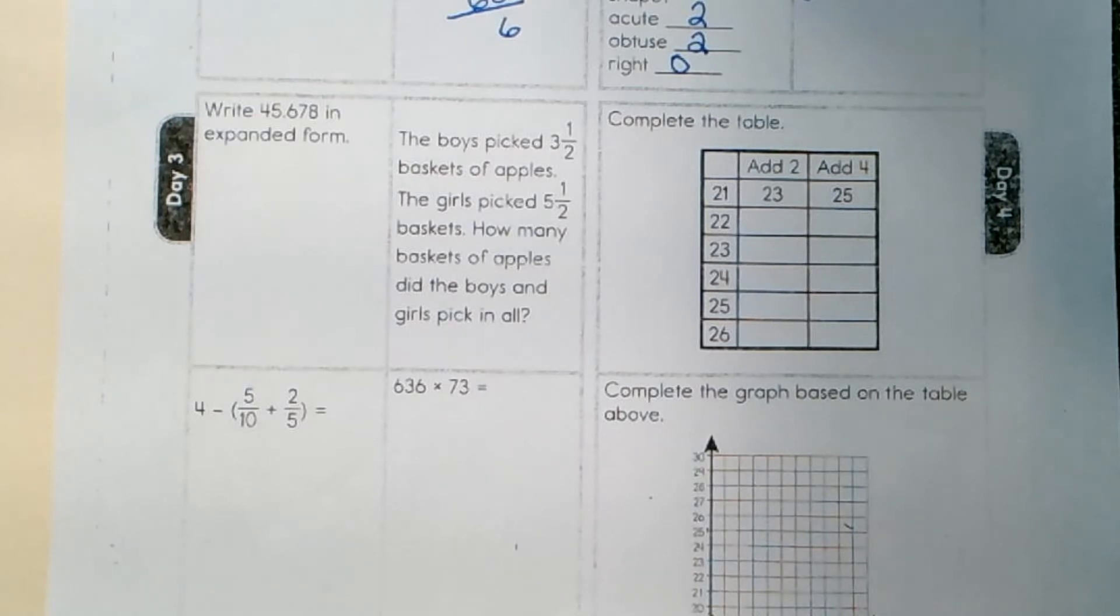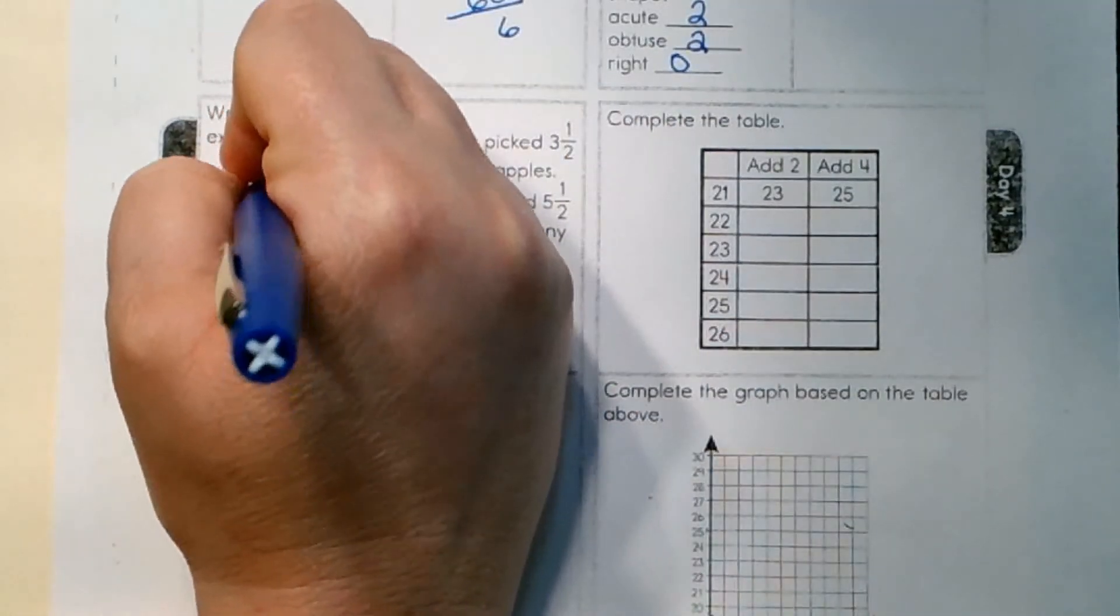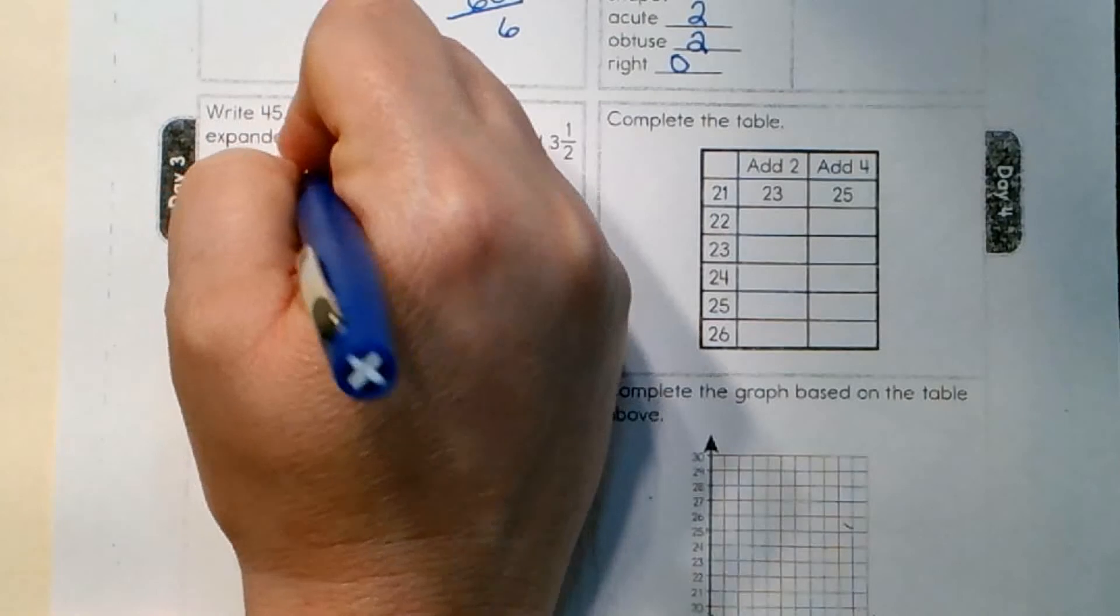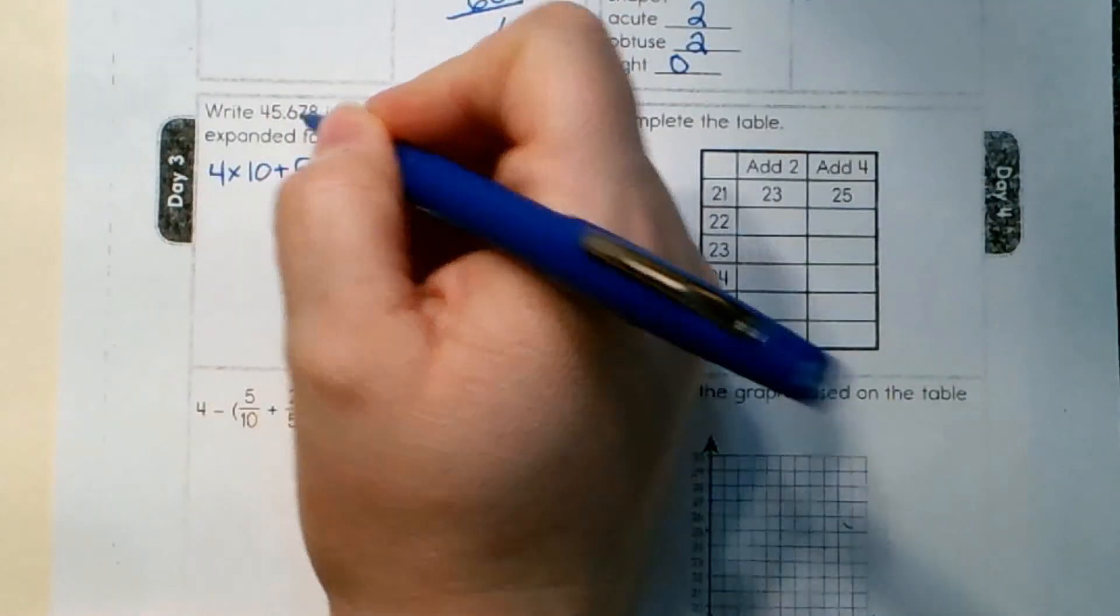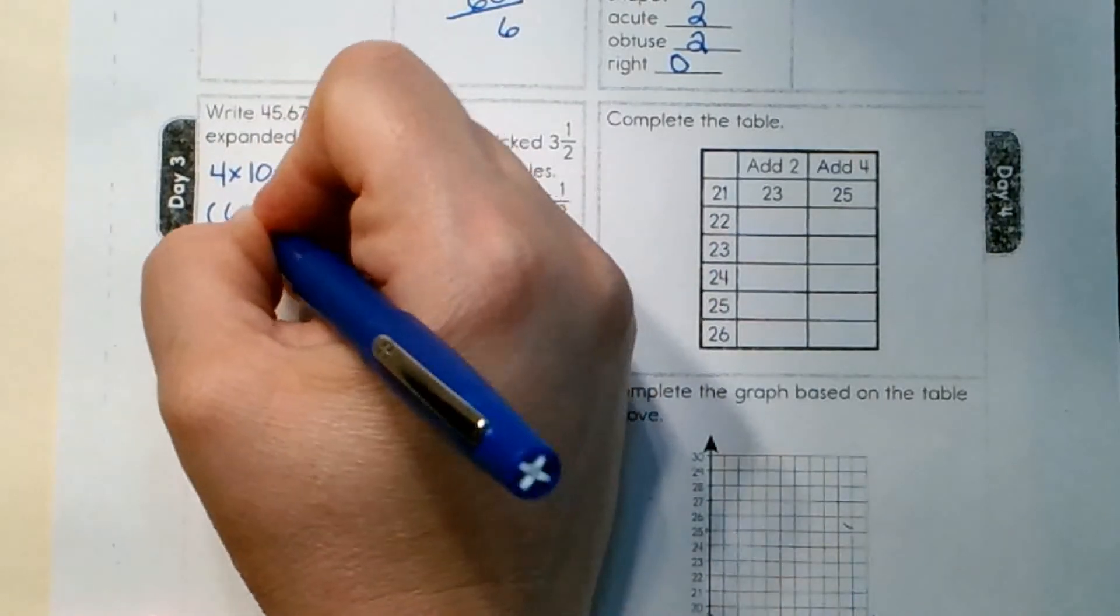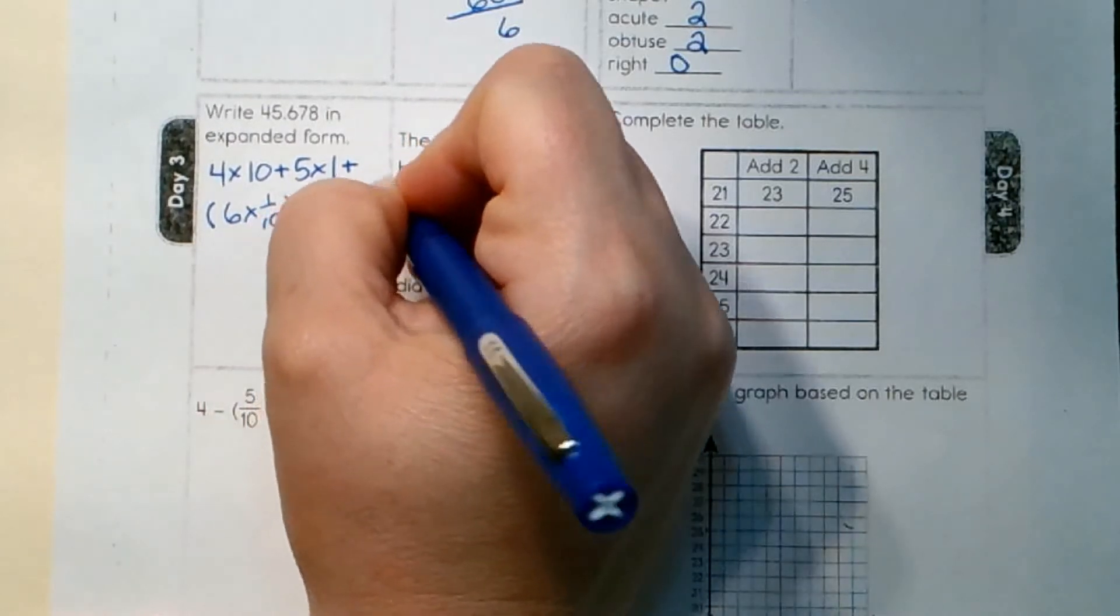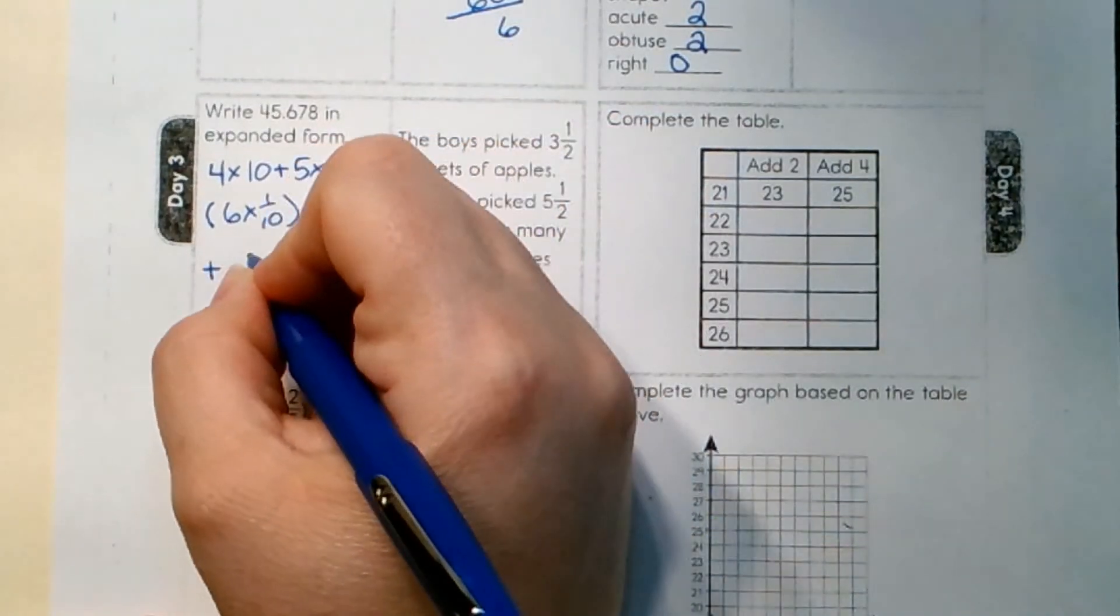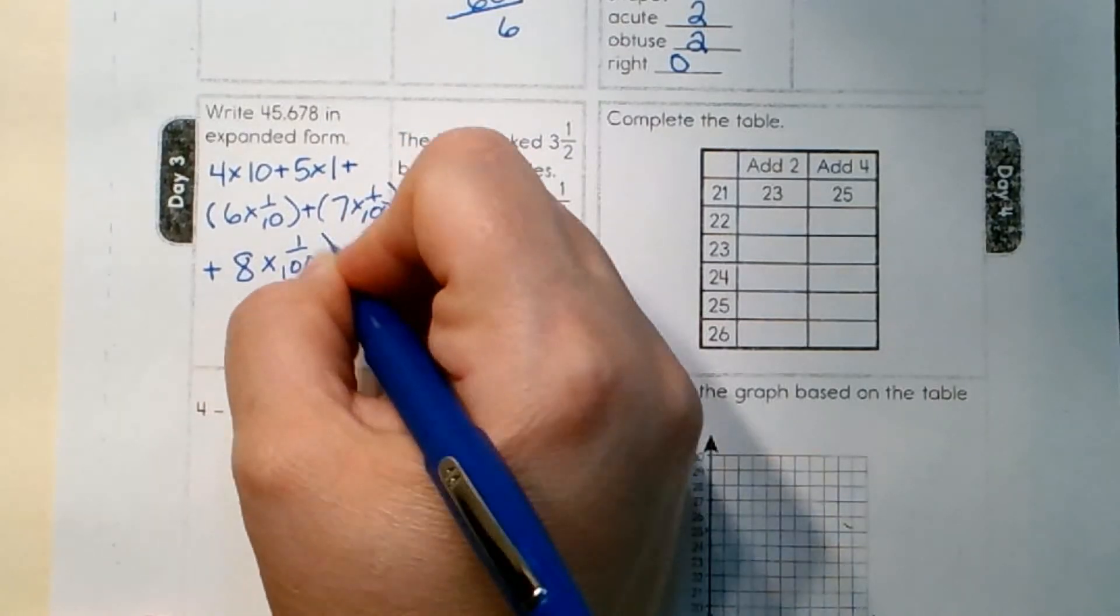Write 45.678 in expanded form. So, 4 times 10 plus 5 times 1. That's our whole number. After the decimal, everything gets put into parentheses. So we're going to start it here. 6 times 1 tenth plus 7 times 1 hundredth plus 8 times 1 thousandth.